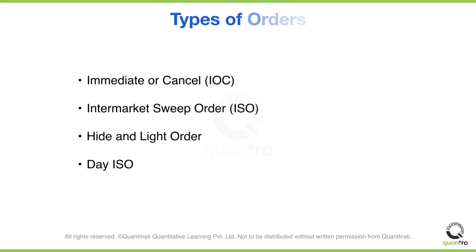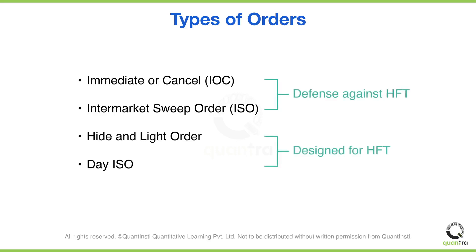Out of the four order types we have learned, the first two — immediate or cancel and intermarket sweep order — are the ones that we can use as a defense against HFTs. The other two are only applicable if you are an HFT yourself. Still, it's important to be aware of them and understand how they work to make informed trading decisions.